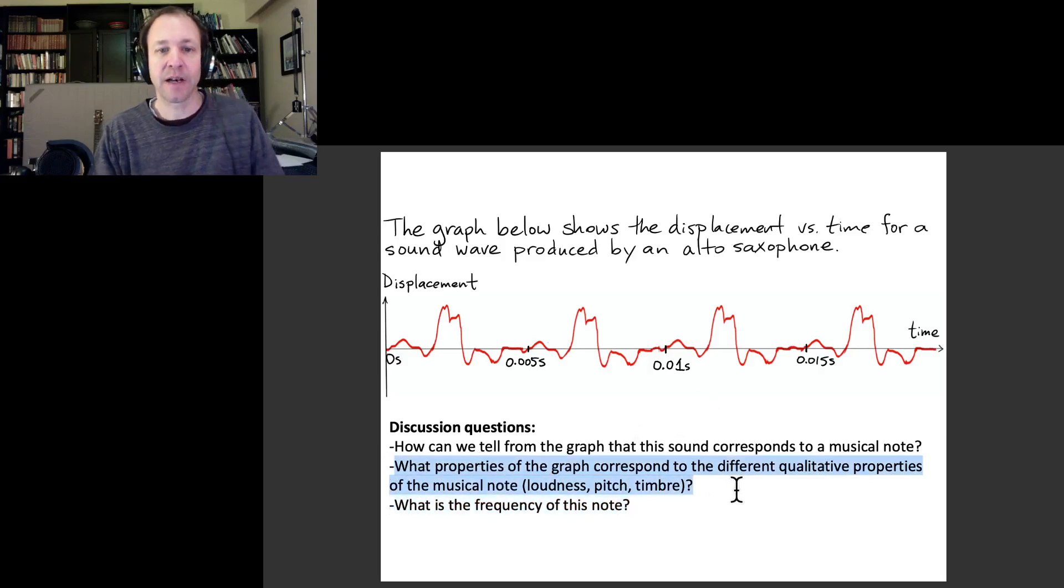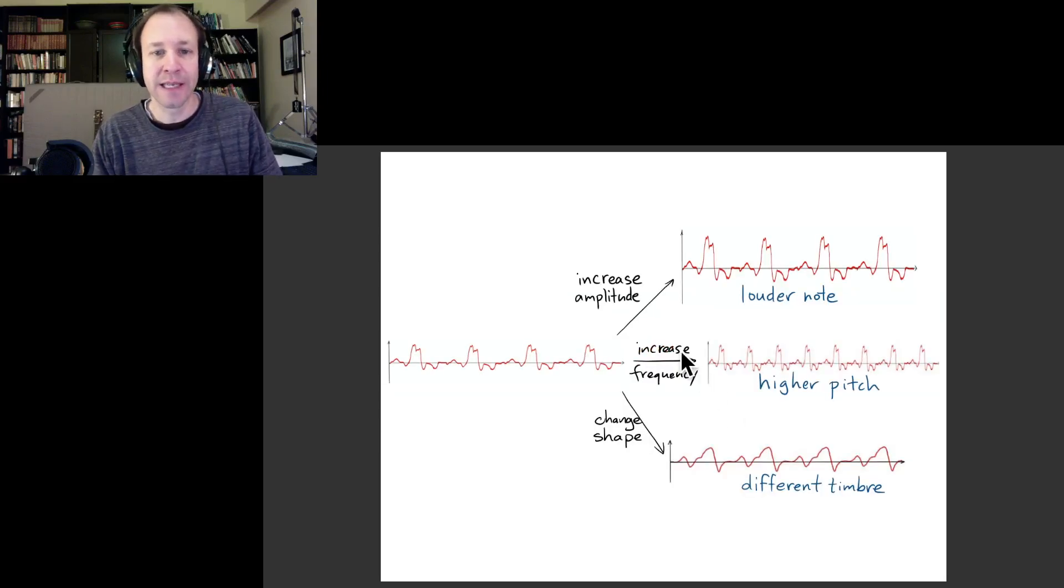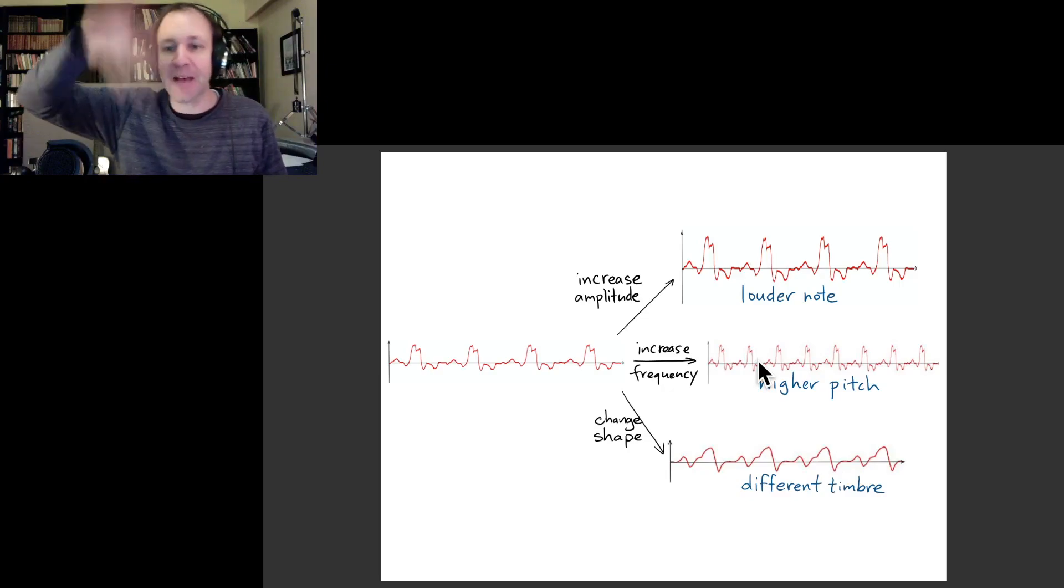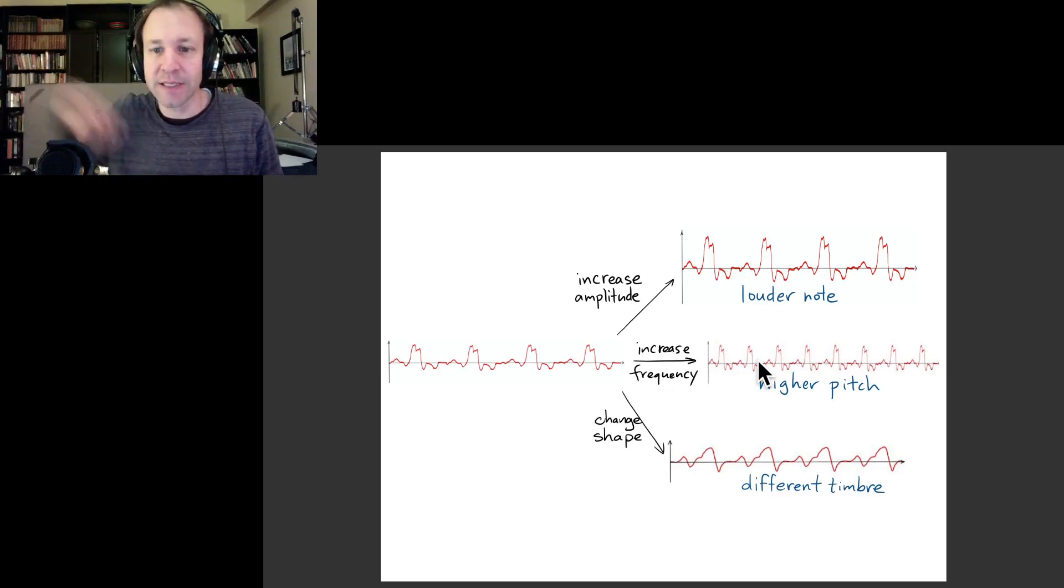What are the properties of the graph that correspond to pitch, loudness, and timbre? You probably already know that pitch, whether a note is high or low, has something to do with its frequency. Indeed, if we were to take this time graph and think of a similar one that was just squished in the time direction, so the same things happening but at a higher frequency, then that would sound like a note with a similar quality but a higher pitch.